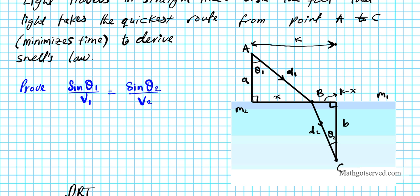To figure out D₁ and D₂ we use the Pythagorean theorem. D₁, the distance light traveled in medium 1, is the square root of a² plus x². D₂, the distance light traveled in medium 2, is the square root of b² plus (K minus x)². So D₁ and D₂ are derived from the Pythagorean theorem on each triangle.